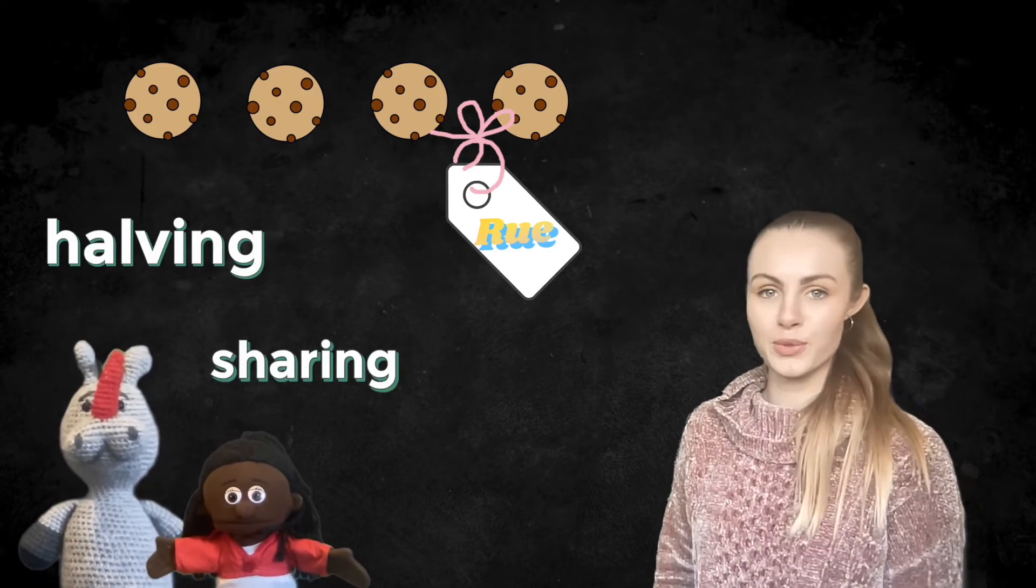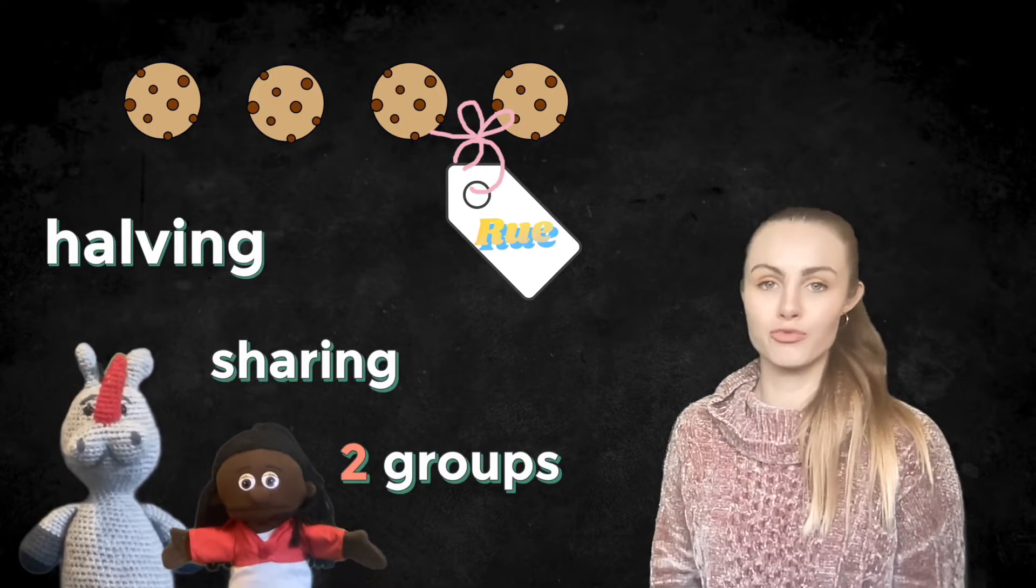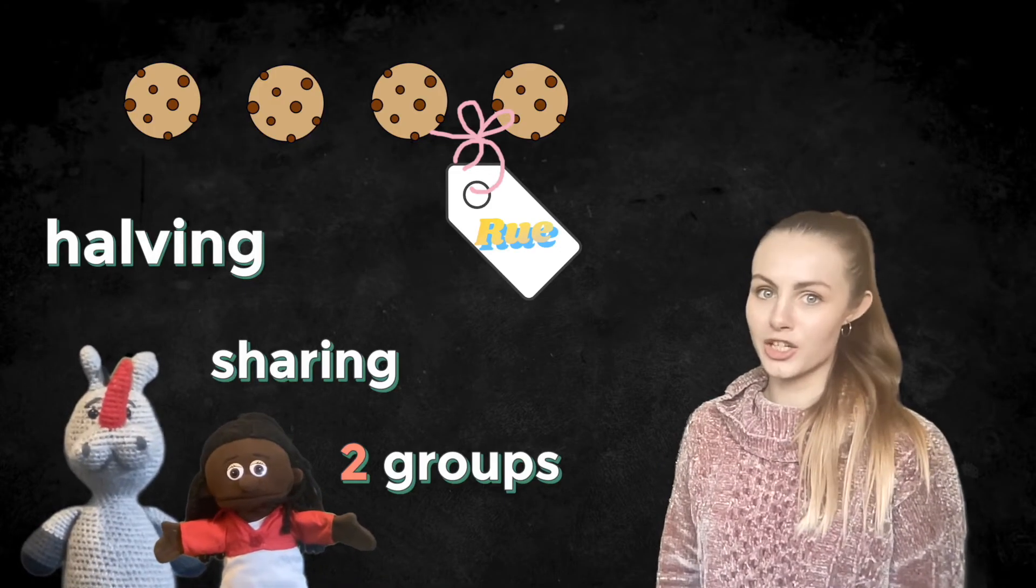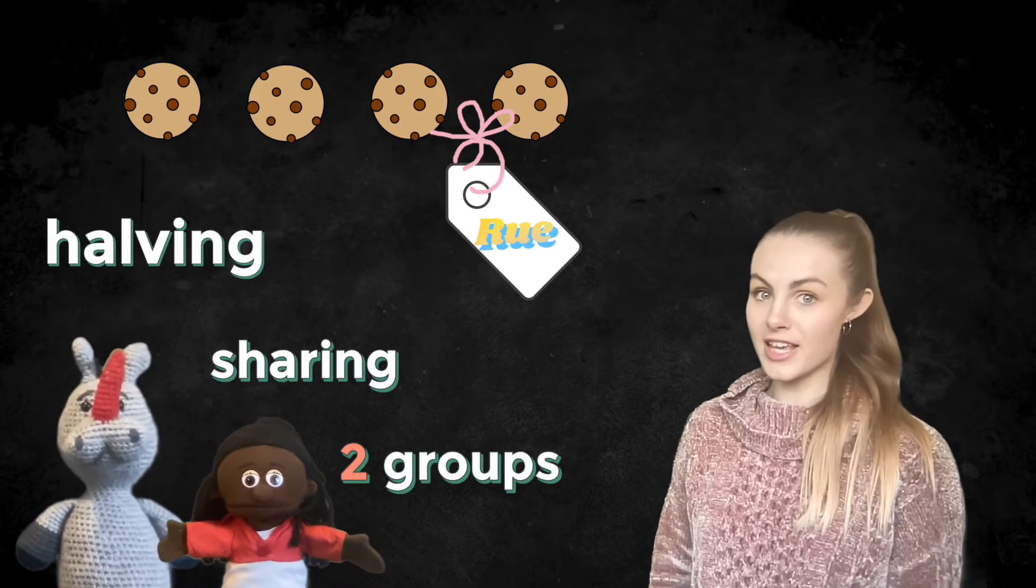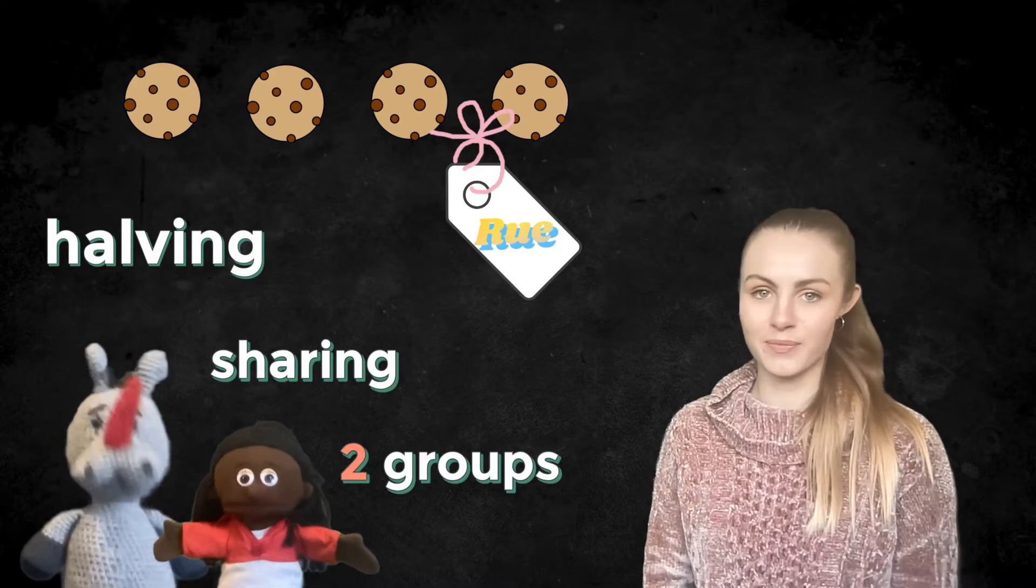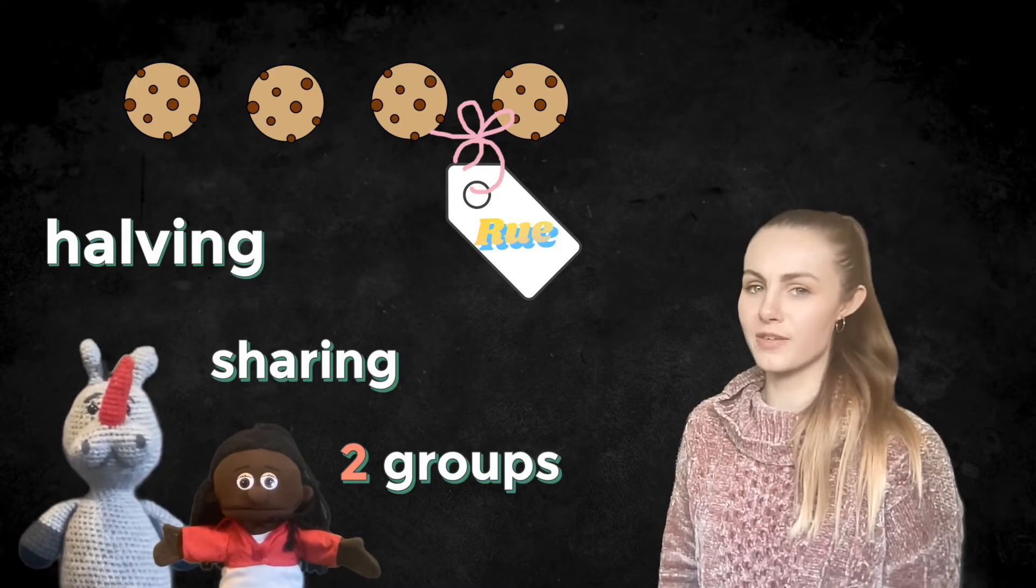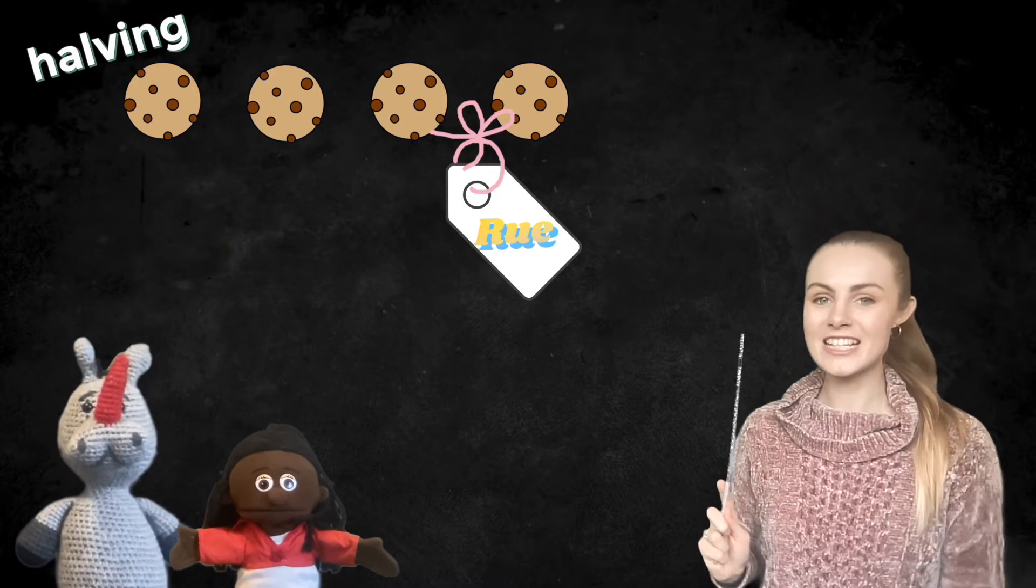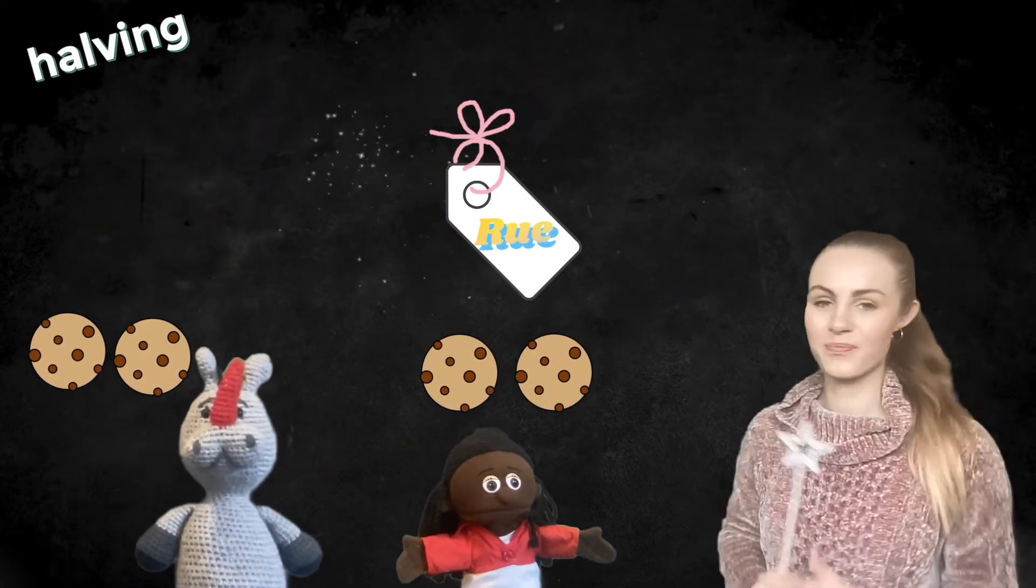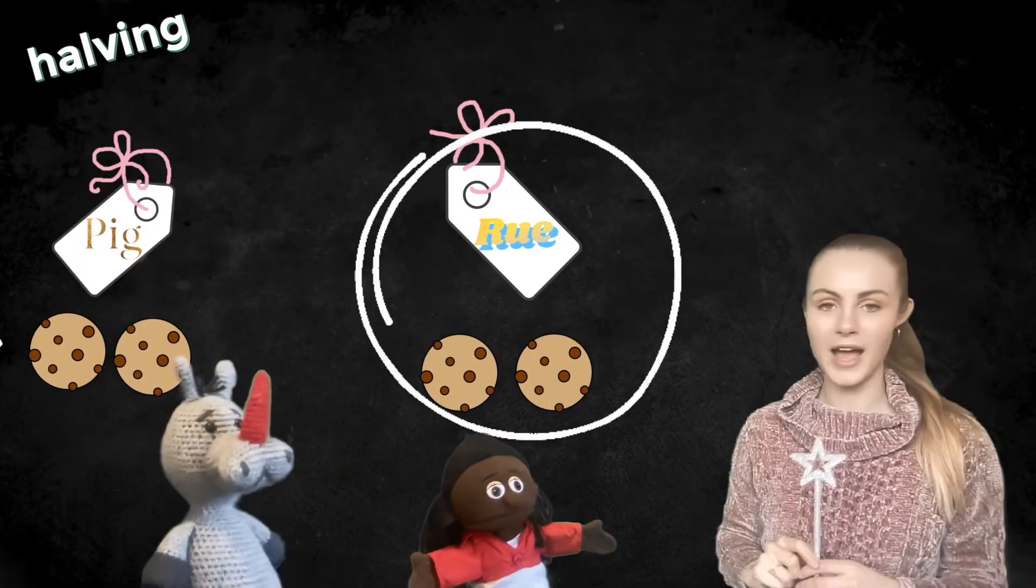When we are halving, we are sharing our total equally between two groups. That means we're going to share out these cookies equally between Roo and Pig. I'll just get my wand then. Ready? Now Roo's got two and Pig's got two.